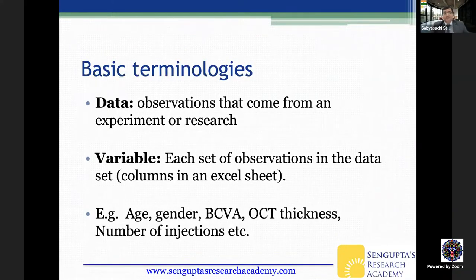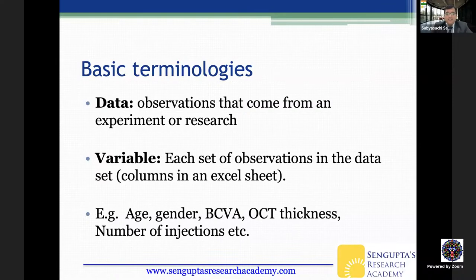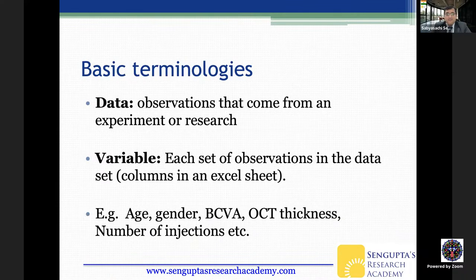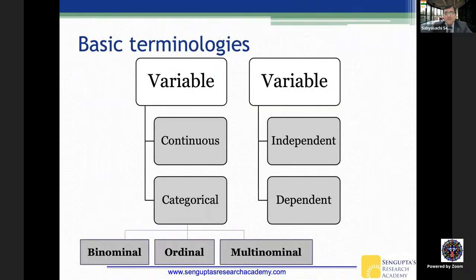Let's start from scratch with basic terminology. Data is simply observations from an experiment or research put together in one place — it must be organized and put up well. A variable means each set of observations in the dataset — every column in an Excel sheet is a variable, where each patient or eye is a row and each measurement is a column. Variables are of two main types: continuous and categorical.